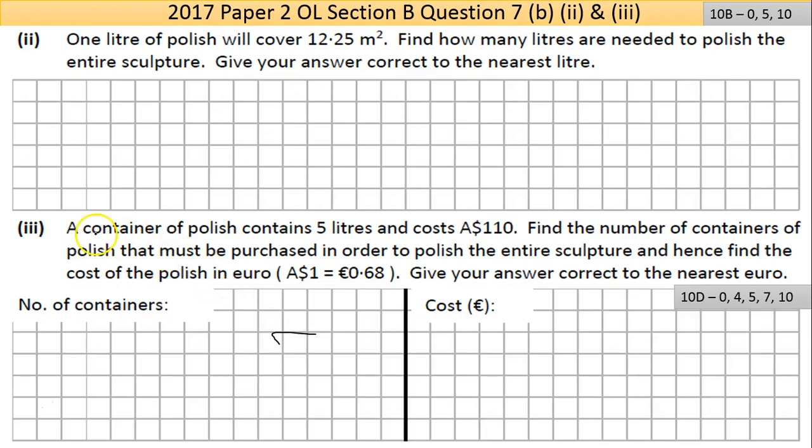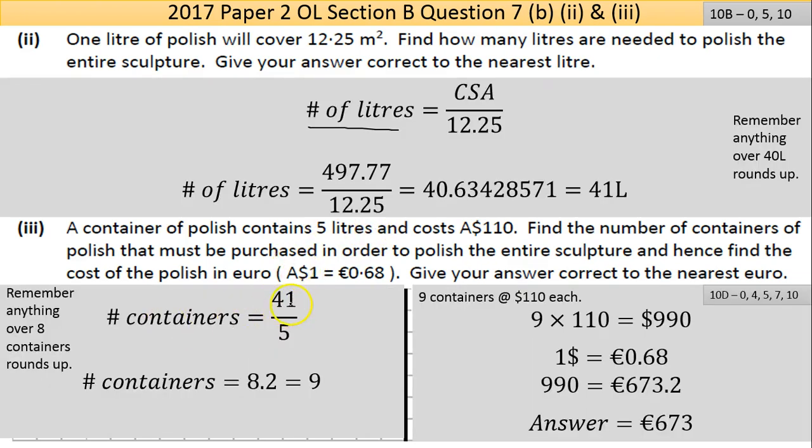Part 3: a container of polish contains 5 liters and costs A$110. Find the number of containers needed to polish the entire sculpture. There's 41 liters needed, and you're buying containers of 5 liters, so divide: 41 ÷ 5 = 8.2. That means you need 9 containers. You can't buy 0.2 of a container. Nine times 110 gives the cost: A$990.